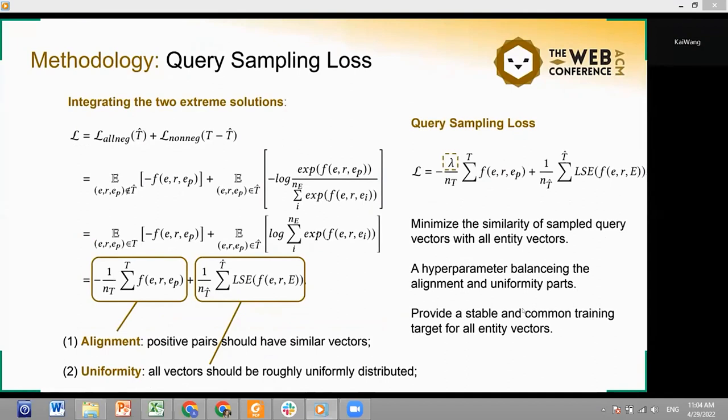Given a batch of triples, we sample a part of triples to be trained with all-negative loss and the rest is trained with non-negative loss. By the reorganization of the combined loss function, we find there are two items exactly satisfying the two properties of contrastive learning. The first item maximizes the scores of all positive triples, which achieves the alignment property. And the second uniformity property means that in order to learn a distinguishable vector representation for each symbol, all vectors should tend to be uniformly distributed in the vector space. We find the second item in this loss function, which conducts all-negative training to sampled queries, is a more efficient way to achieve the uniformity.